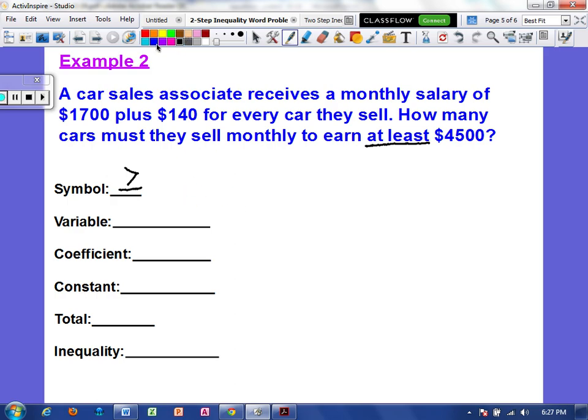Now, the variable wants to know how many cars. So I'm going to represent that with a C. So the coefficient is whatever number needs to be multiplied by the number of cars. Well, it says that the salesman gets $140 for every car that they sell. So the word every is cluing us in that that's multiplication. So you would multiply $140 for every car. And it says that they already get a monthly salary of $1,700.